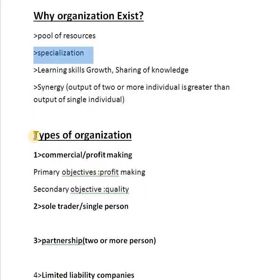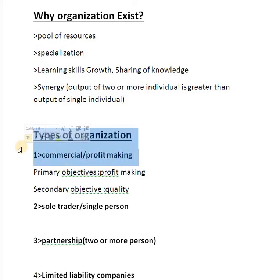Next is the types of organization. As we have discussed, different organizations have different goals, and we can therefore classify them into several different categories. Number one is commercial or profit-making organizations. Commercial or profit-seeking organizations see their main objective as maximizing the wealth of their owners. There are three common forms that a commercial company can take. Number one is the sole trader.